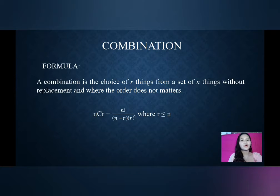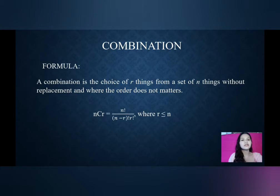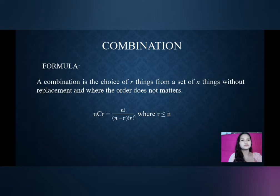So, our formula is nCr is equal to n factorial over the quantity (n minus r) factorial times r factorial, where r is less than or equal to n.